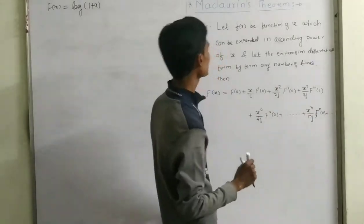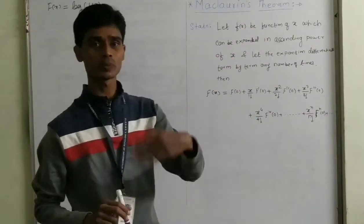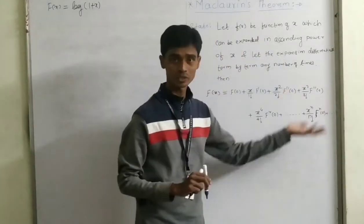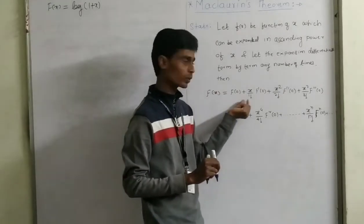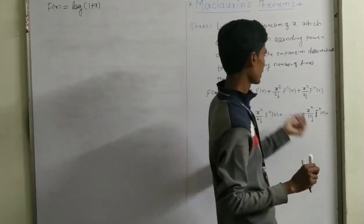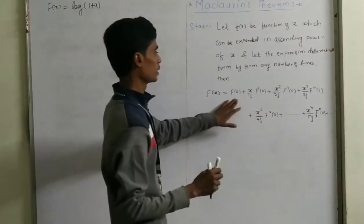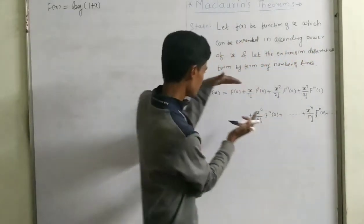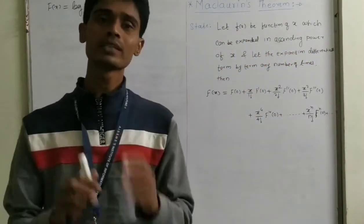So what is the Maclaurin theorem? It says that f(x) is a function of x which can be expressed as a power series, and this expansion is differentiable term by term. It is like this: f(x) = f(0) + x/1! · f'(0) + x²/2! · f''(0) and so on. So if you are putting the values of f(0), f'(0), f''(0), f'''(0) in this statement, then we get the expansion of the given function.